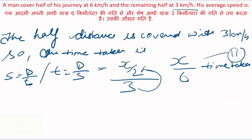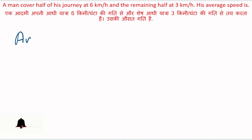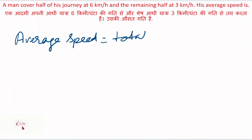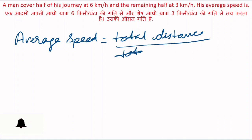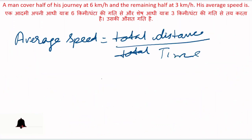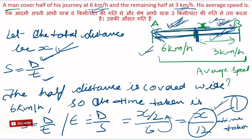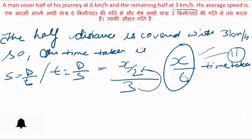जैसे कि speed का formula होता है: distance by time। Average speed is equal to total distance by total time। Total distance क्या है? हम लोगों ने x माना है। Total time क्या हुआ? Half cover करने के लिए x by 12 time लगा और remaining half को cover करने के लिए x by 6 time लगा।